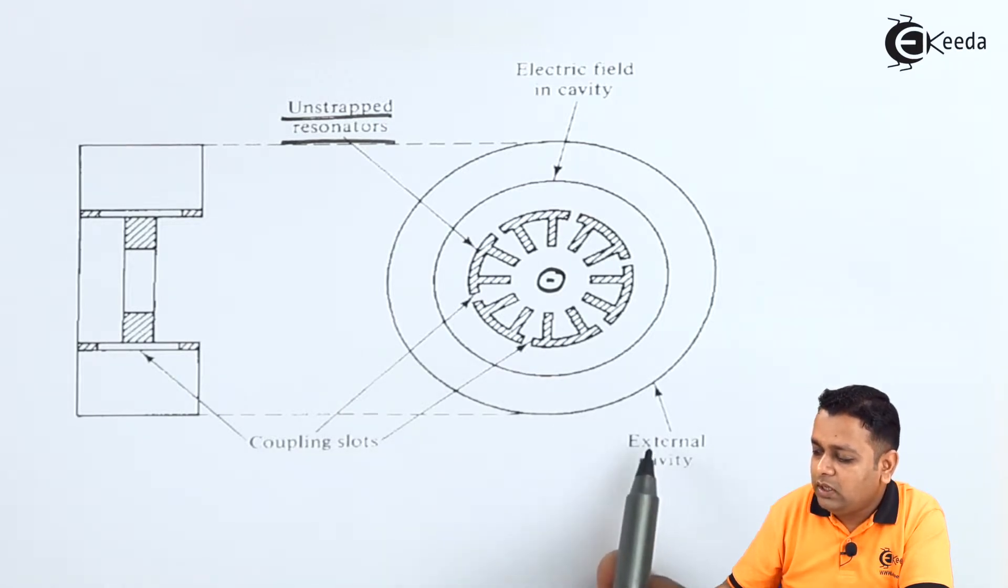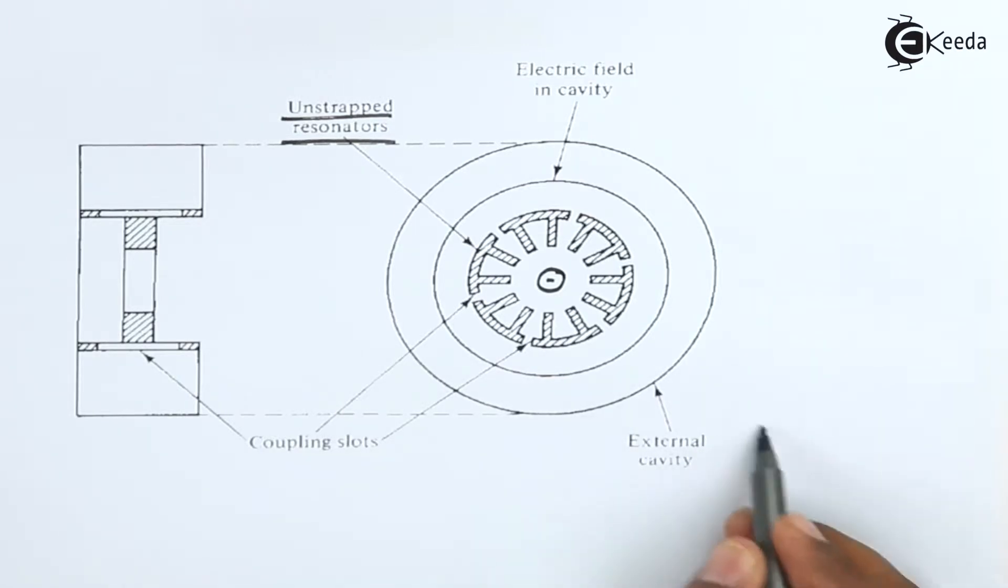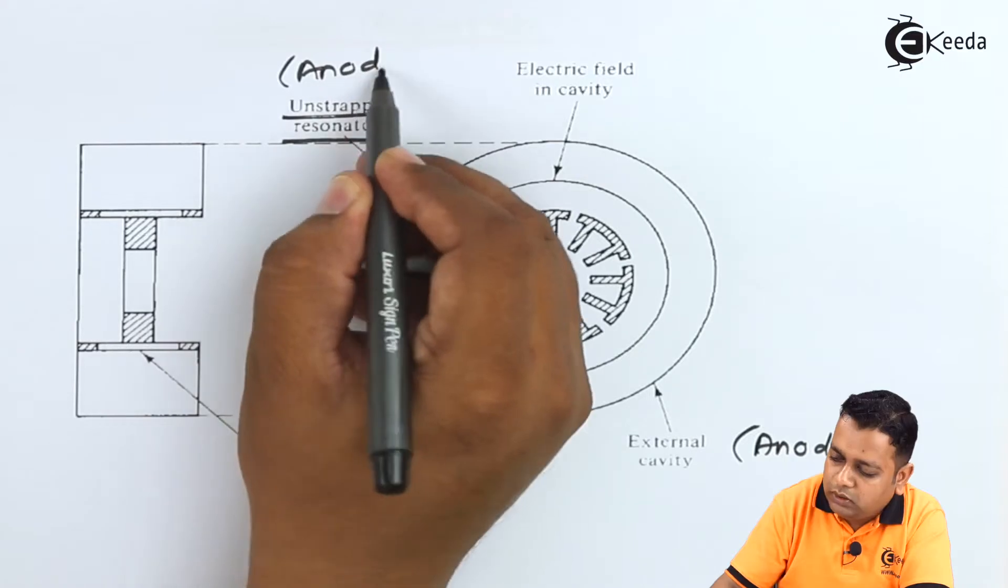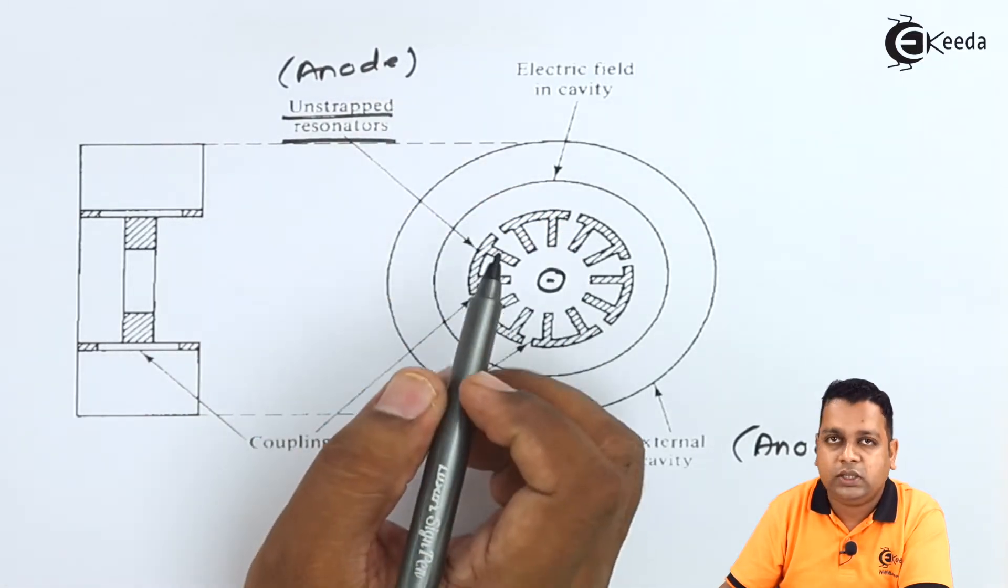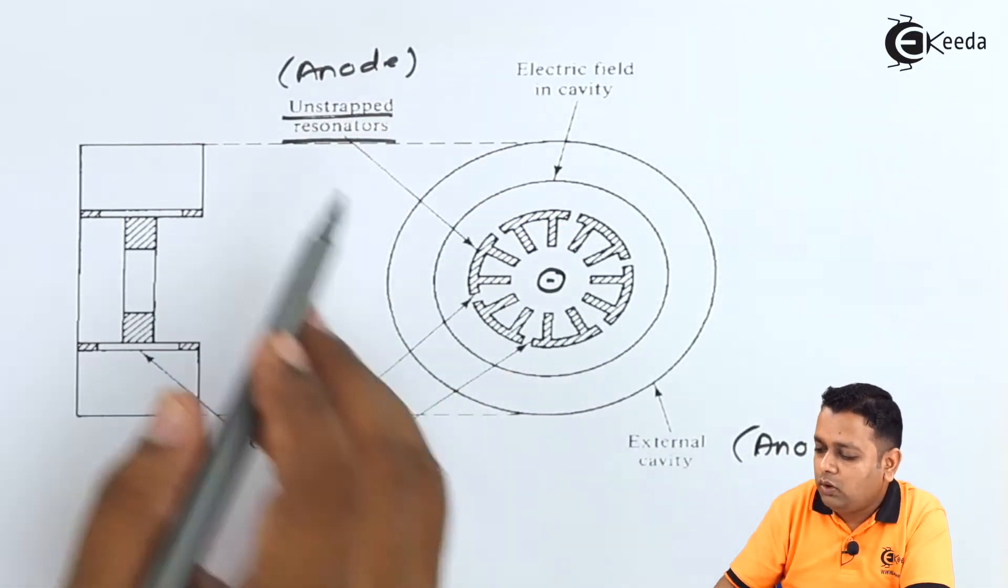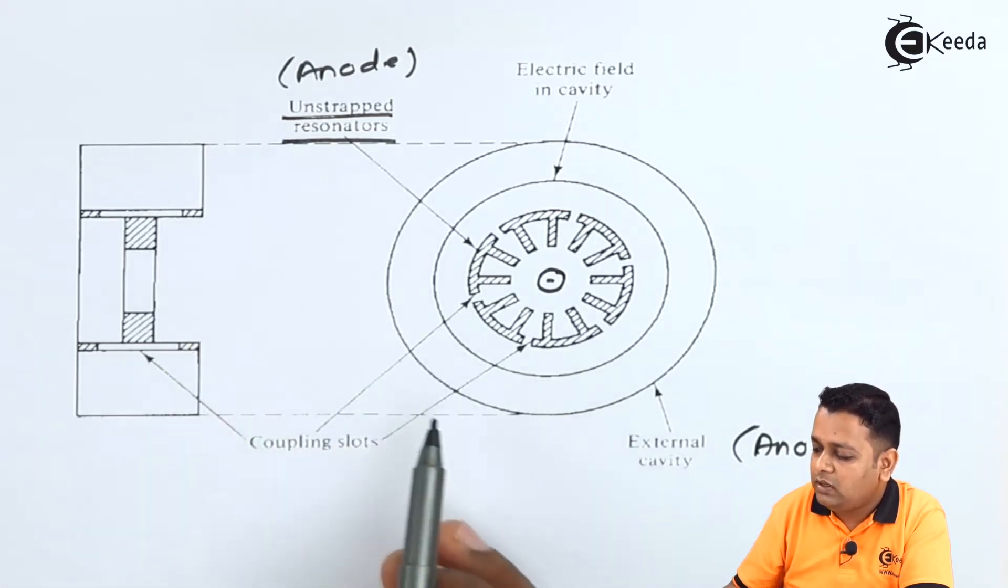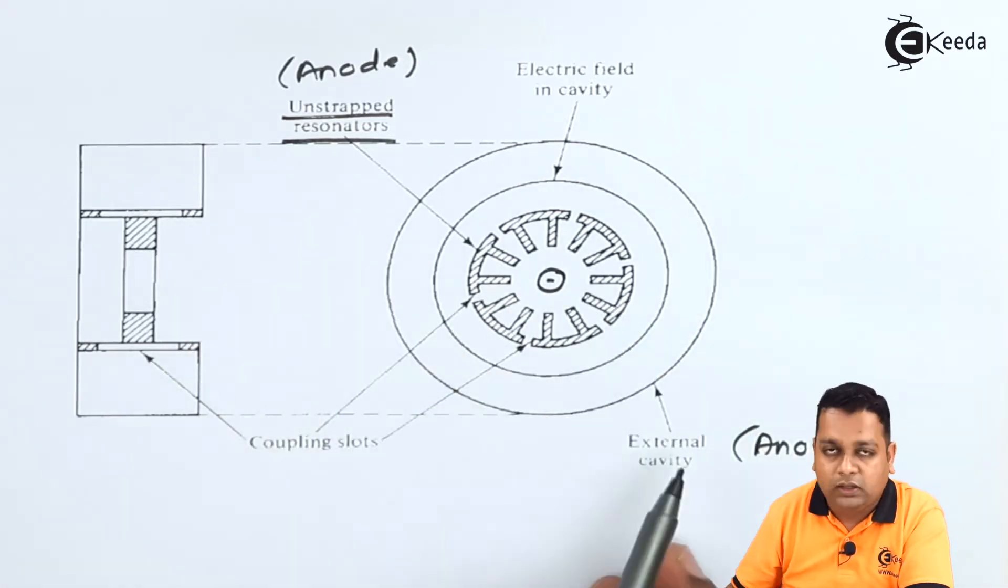So this is the external cavity, this is also a part of anode. This is also a part of anode or the unstrapped resonators.